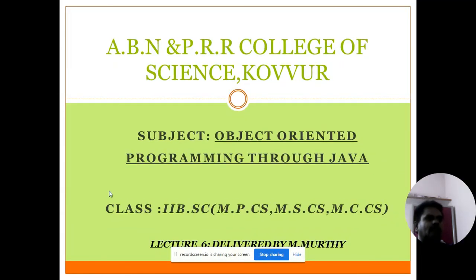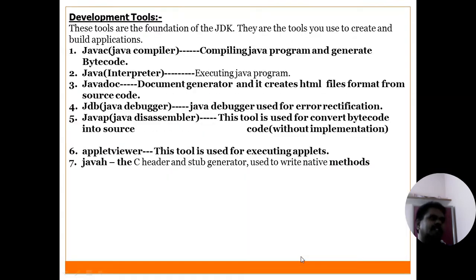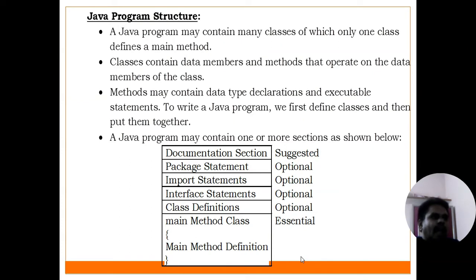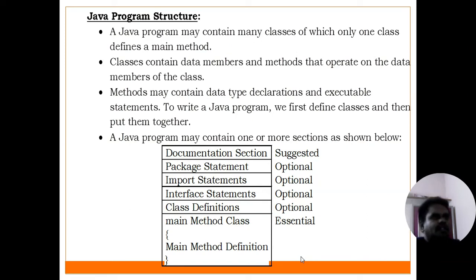Hello students, welcome to online class. Subject: Object Oriented Programming through Java. Today's concept is the structure of a Java program. In general, a Java program may contain several classes. In these classes, one of the classes contains the main method. A class is a collection of data members and member functions.